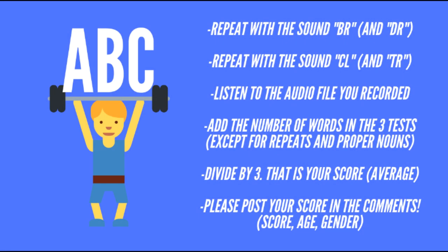And now I want you to repeat this exercise for 60 seconds two more times. First, you're going to use the sound BR, and DR if you run out of words. And in the third iteration, you're going to repeat with the sound CL and TR. Now that you're done with all three exercises, I want you to listen to the audio file you recorded. Add the number of words in the three sets, except for repeats and proper nouns. Divide by three and that is your average score.